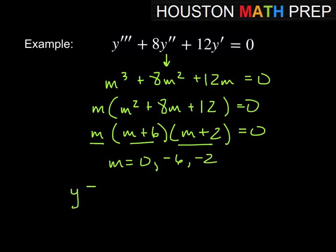So writing this in our general solution would be c1 e to the 0x, we'll talk about that in a second, plus c2 e to the minus 6x plus c3 e to the negative 2x. And then just like we talked about in one of the previous videos with the second order, e to the 0x, e to the 0, certainly that's going to be 1 there.